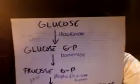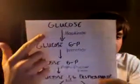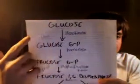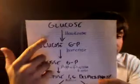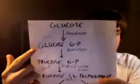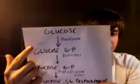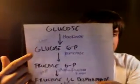Alright guys, really quickly I'd like to talk to you about glycolysis. You start with a molecule of glucose and using hexokinase and one ATP, it's converted into glucose-6-phosphate. Of course that ATP is going to turn into an ADP.